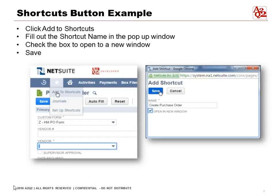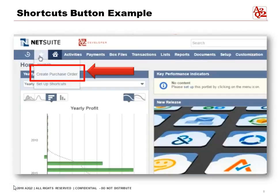Fill in the name of what you're going to call that shortcut — let's call it Create Purchase Order. You can check the box if you want to open it in a new window, or leave it unchecked to open in the current window, then hit Save. You can now see under the Shortcuts menu that Create Purchase Order has been added.